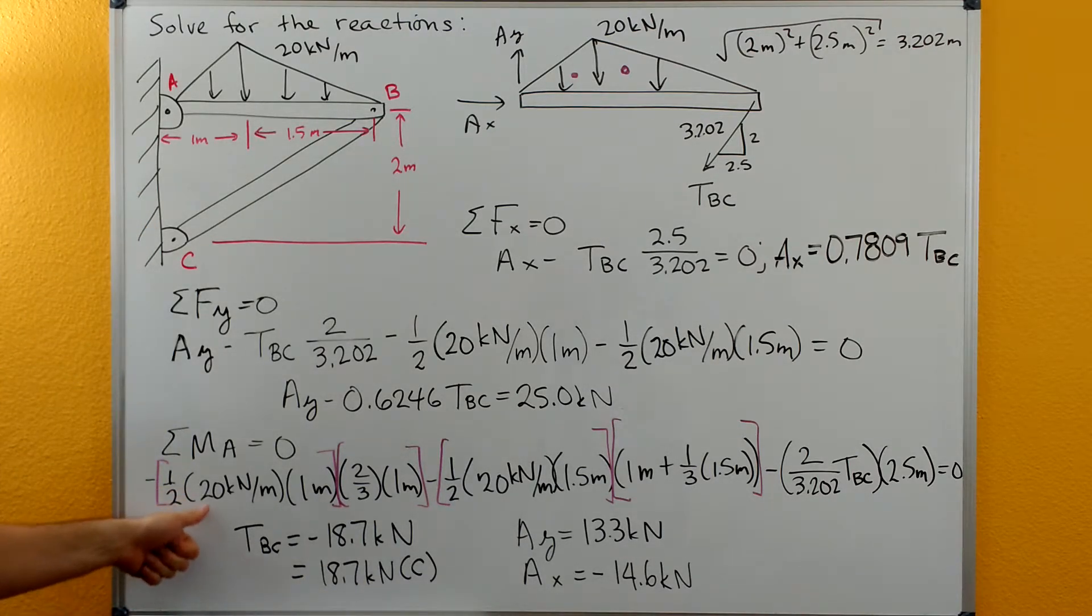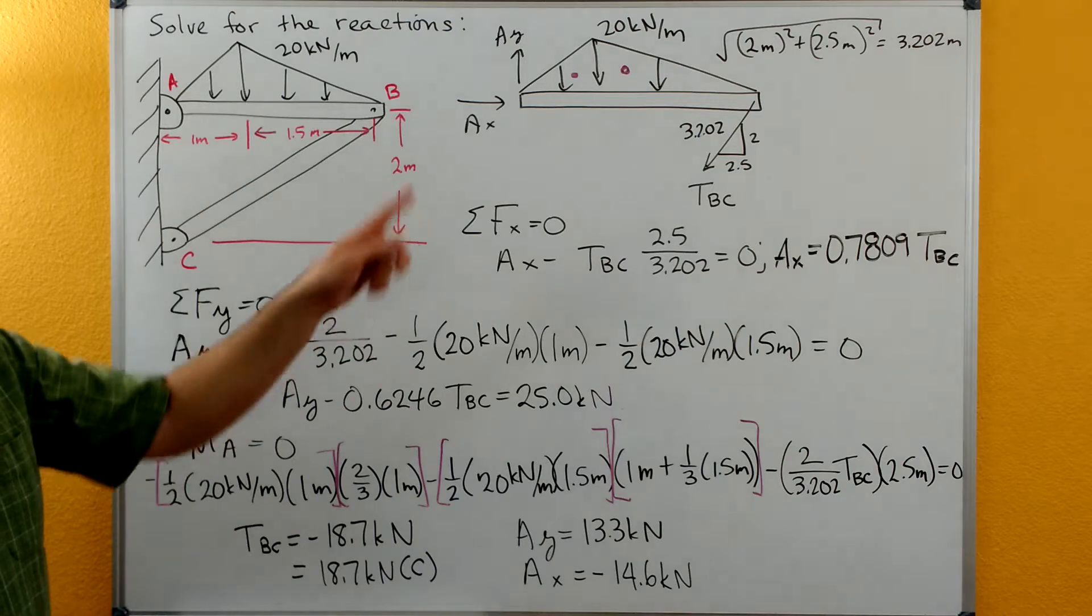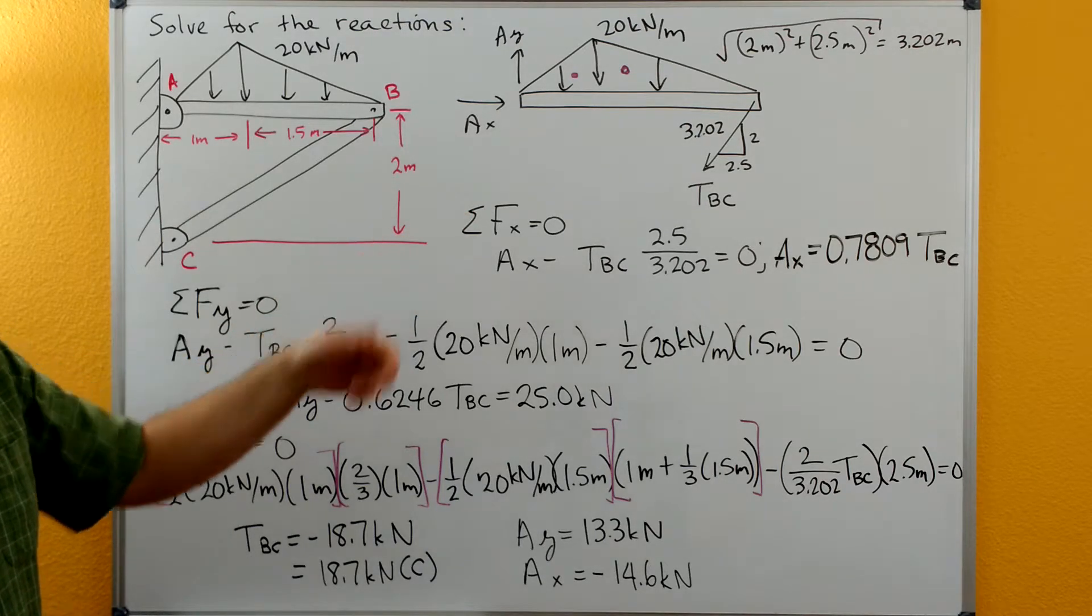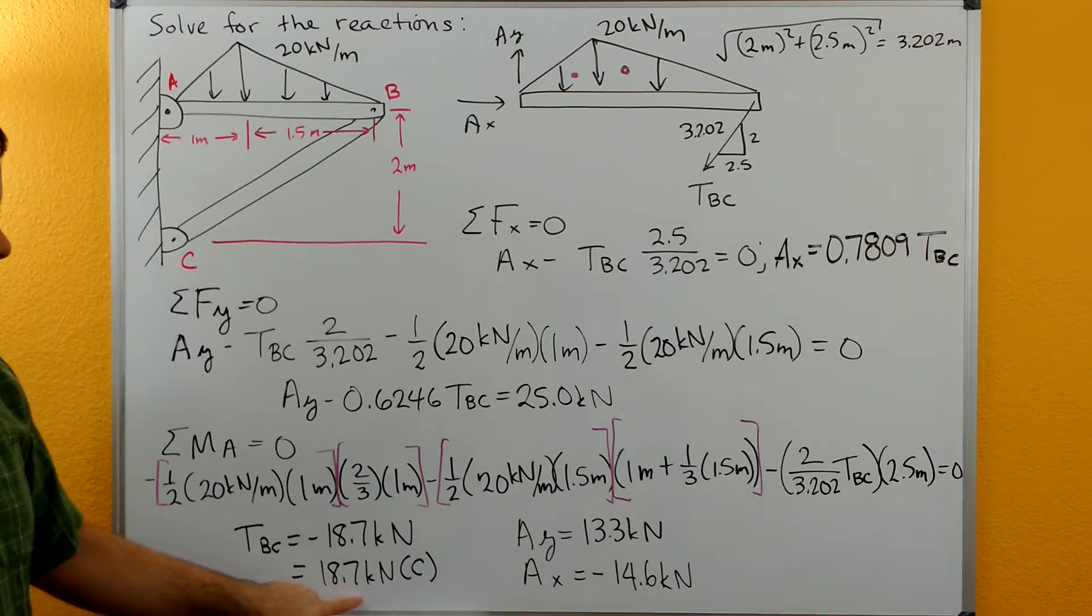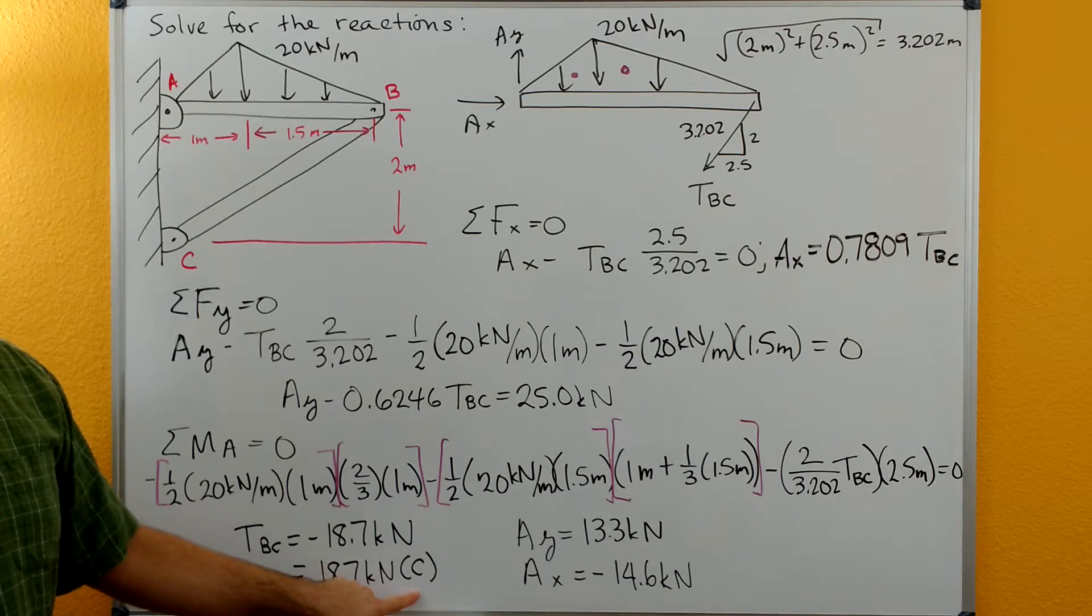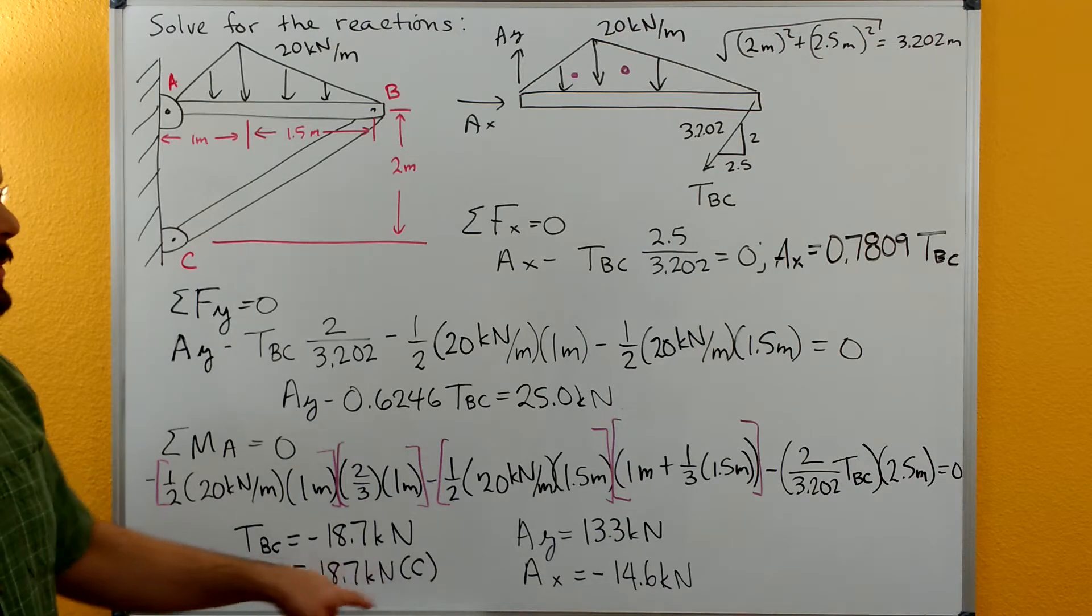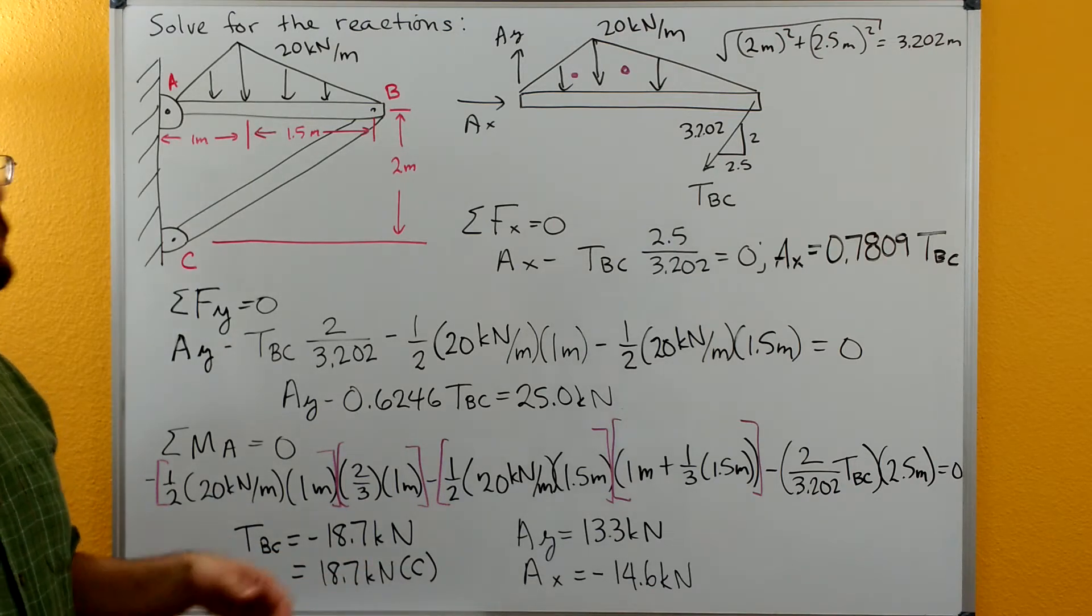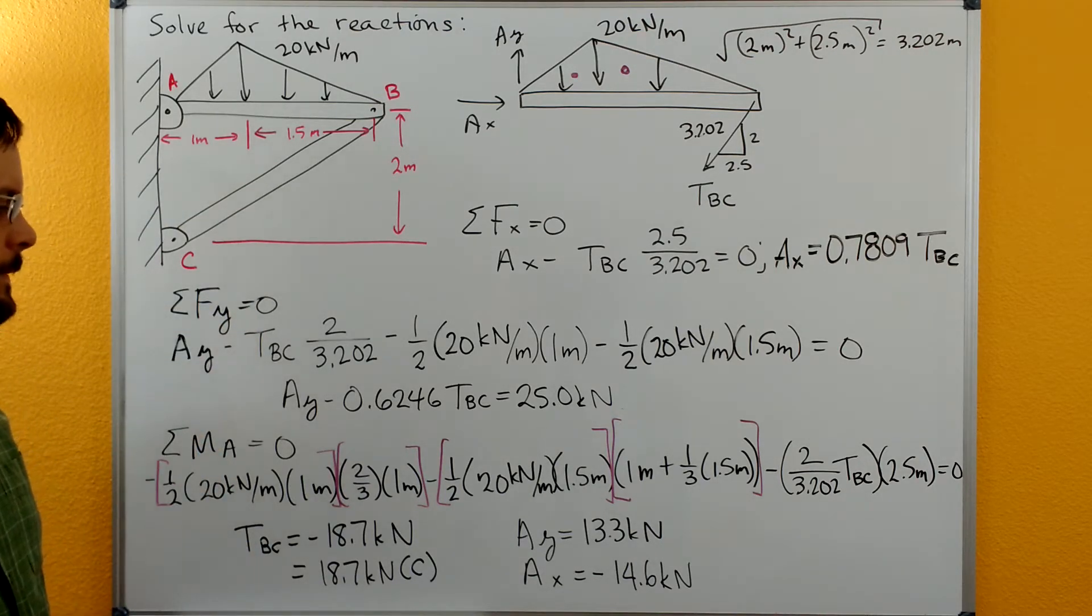From here we just have the one unknown so we can solve it. We get negative 18.7 kilonewtons. So that means that that direction should be opposite so it's really in compression instead of tension. So I wrote 18.7 kilonewtons and then C next to it to show that it's in compression. Make sure that you do the tension and compression only with these two force members, so things like trusses and weightless links and things like that.